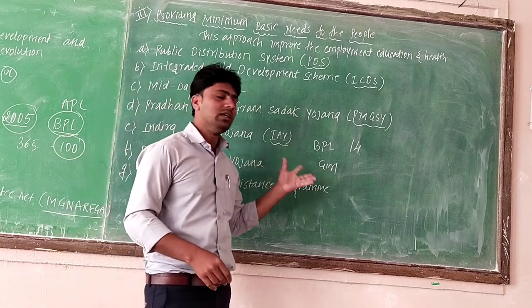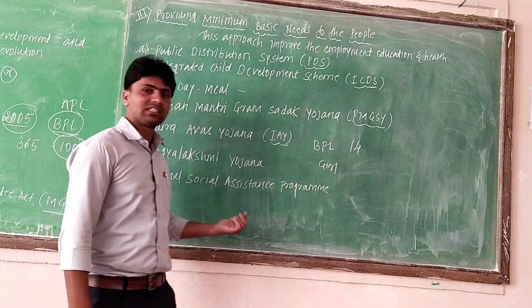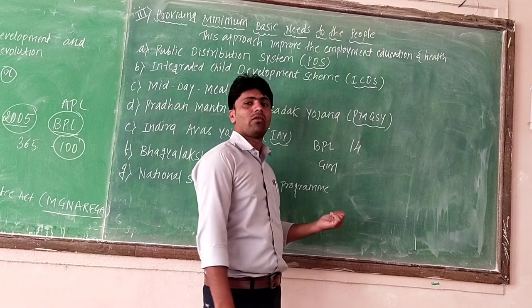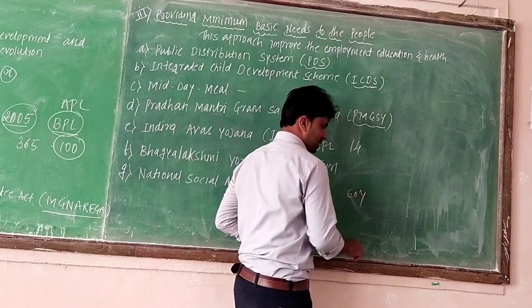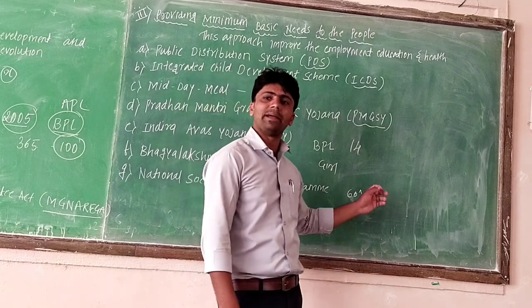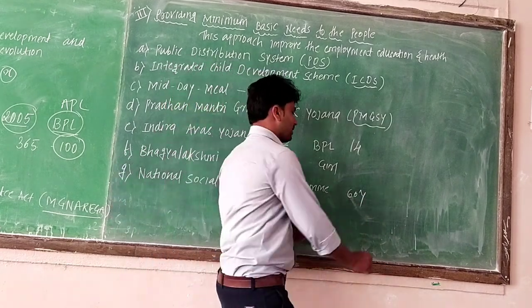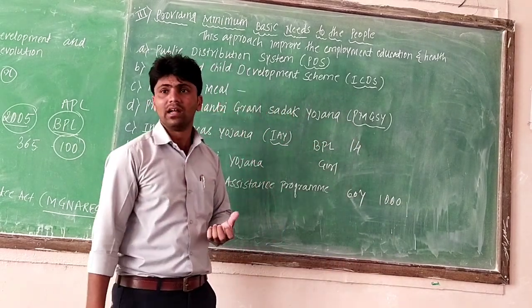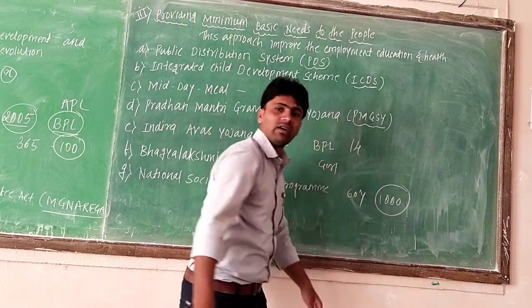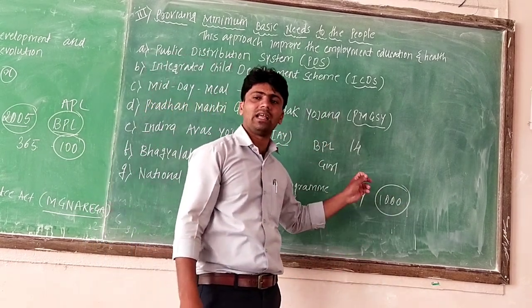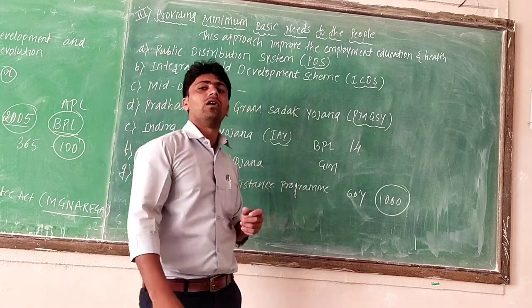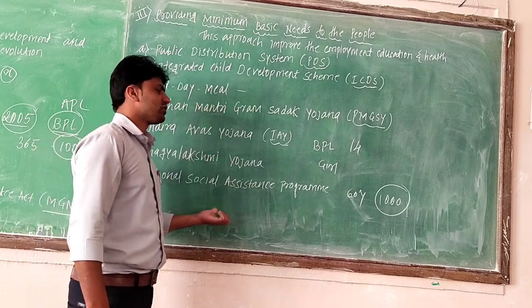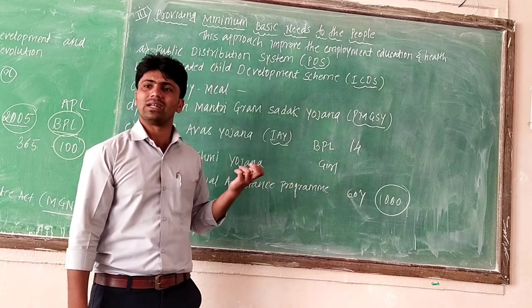The last scheme is the National Social Assistance Program. Under this program, the government announced that after the age of 60 years, senior citizens are entitled to a pension. They receive a monthly pension of Rs. 1,000 — either delivered by post or credited to their bank account. That is the National Social Assistance Program.